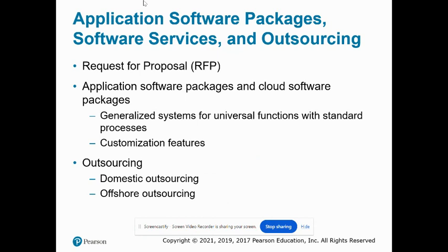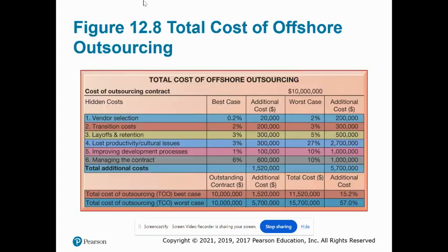What other types of hidden costs can you think of? If a firm spends $10 million on offshore outsourcing contracts, that company will actually spend 15.2% in extra costs, even in the best-case scenario. In the worst-case scenario, when there is a dramatic drop in productivity along with exceptionally high transition and layoff costs, a firm can expect to pay up to 57% in extra costs on top of the $10 million outlay for an offshore contract.